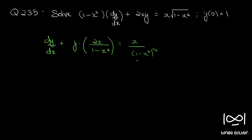So our equation becomes this. This is the standard form of a linear equation, which is dy/dx plus P times y equals Q, where P and Q are functions of x alone.